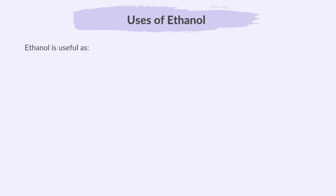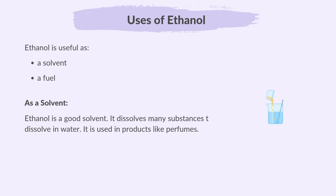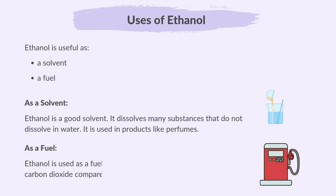Let's look at the uses of ethanol: as a solvent and as a fuel. Ethanol is a good solvent — it dissolves many substances that do not dissolve in water, and is used in products like perfumes. Ethanol is also used as a fuel in cars, and it burns cleanly, producing less carbon dioxide compared to fossil fuels.